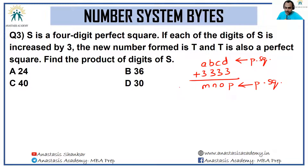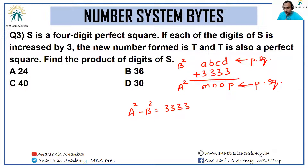Let S = b² and T = a². Then a² − b² = 3333. Additionally, a number whose perfect square is a four-digit number lies in the range 32 to 99, since 32² = 1024 is the smallest four-digit perfect square and 99² = 9801 is the largest. So both a and b necessarily lie within this range.